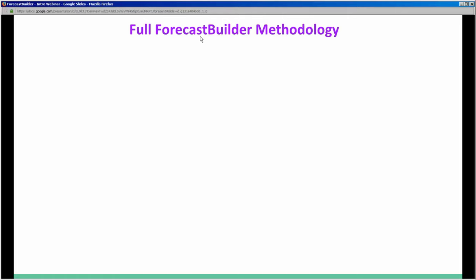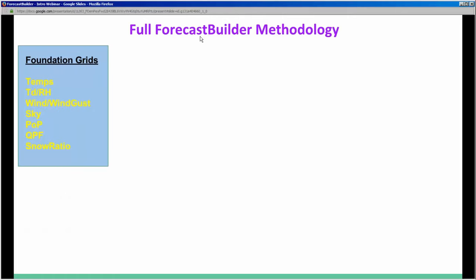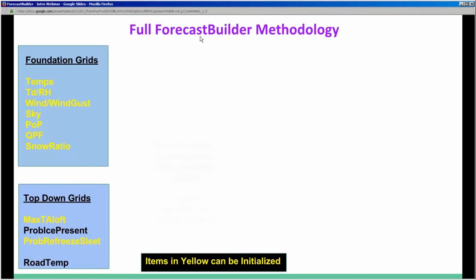The full Forecast Builder methodology breaks down into what we call foundation grids — temperature, dew points, wind, sky, POP, QPF, and snow ratios — all designed to come out of the common starting point, currently the Super Blend, and eventually the National Blend of Models. Max T aloft and prob refreeze sleet are also initialized from model data as part of the top-down grid process. Other top-down grids include prob ice present and road temperature. These are the key components for generating a good weather grid and snow amount/ice accumulation grid based on that top-down process.